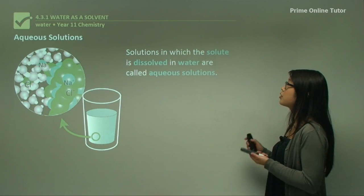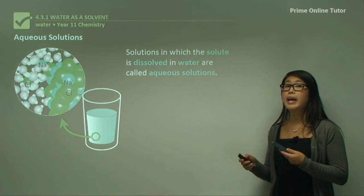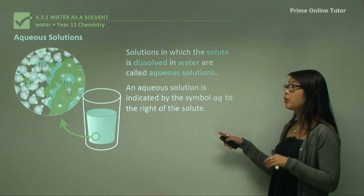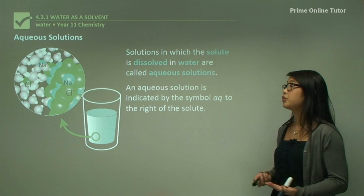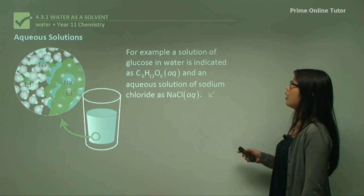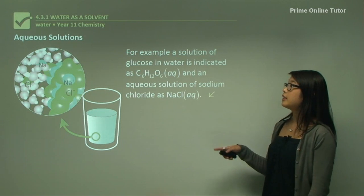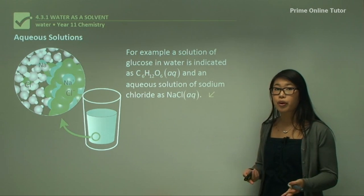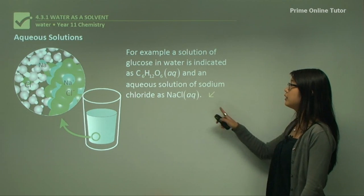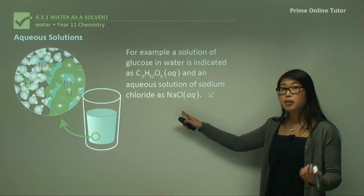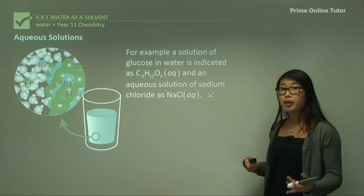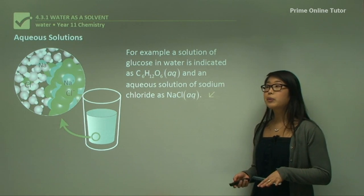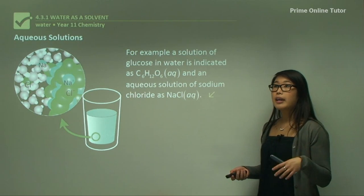Solutions in which the solute is dissolved in water are called aqueous solutions, indicated by the symbol (aq) written to the right of the solute. For example, glucose C6H12O6 dissolved in water is written with (aq) to show it's in water and not a crystal structure. Similarly, sodium chloride NaCl dissolved in water is written with (aq).